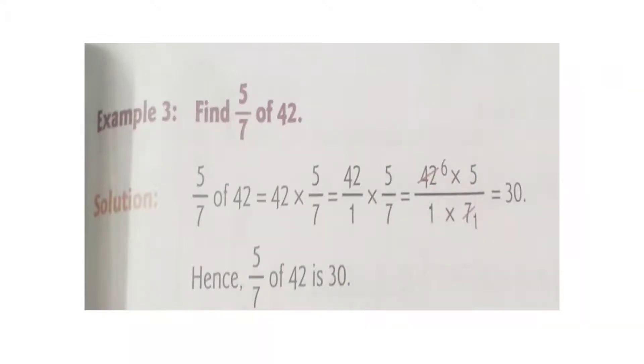Look at the example. Find 5 by 7 of 42. 5 by 7 of 42 means 42 multiply 5 by 7. It means OF means Multiply.